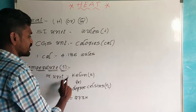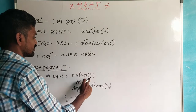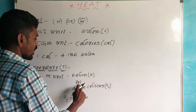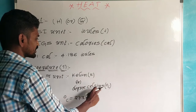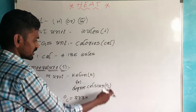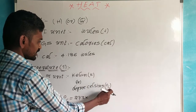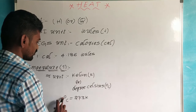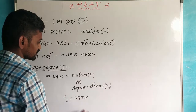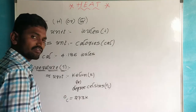The SI unit of temperature is Kelvin, denoted by the symbol capital K. Temperature can also be measured in degrees Celsius or degrees centigrade. One degree centigrade is equal to 273 Kelvin.